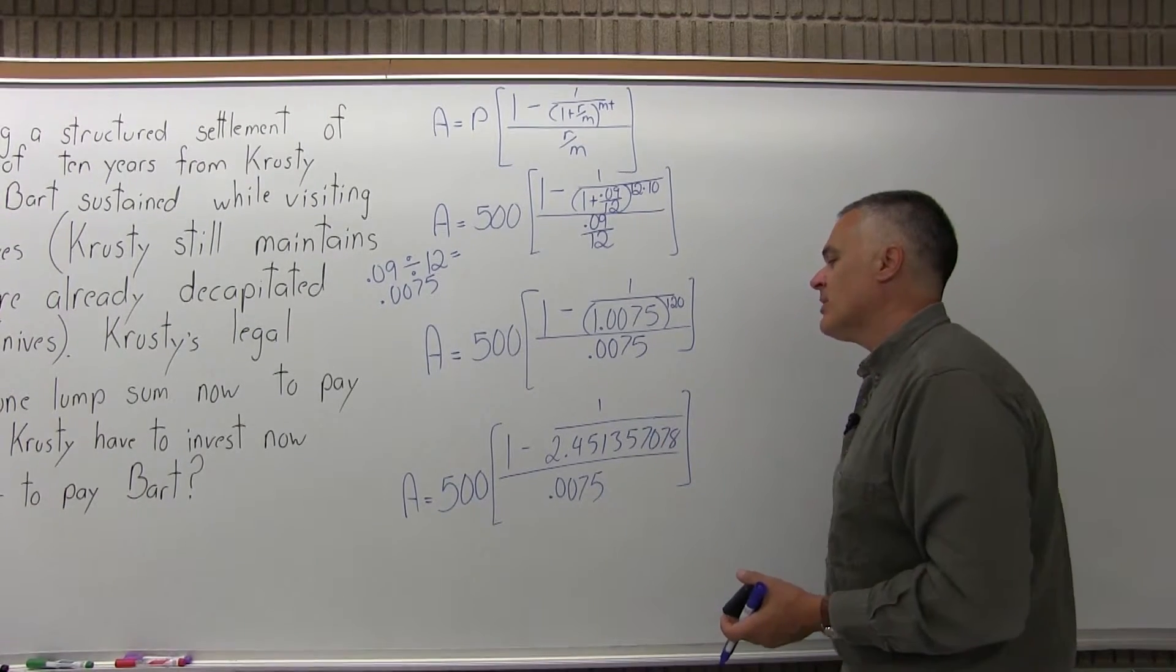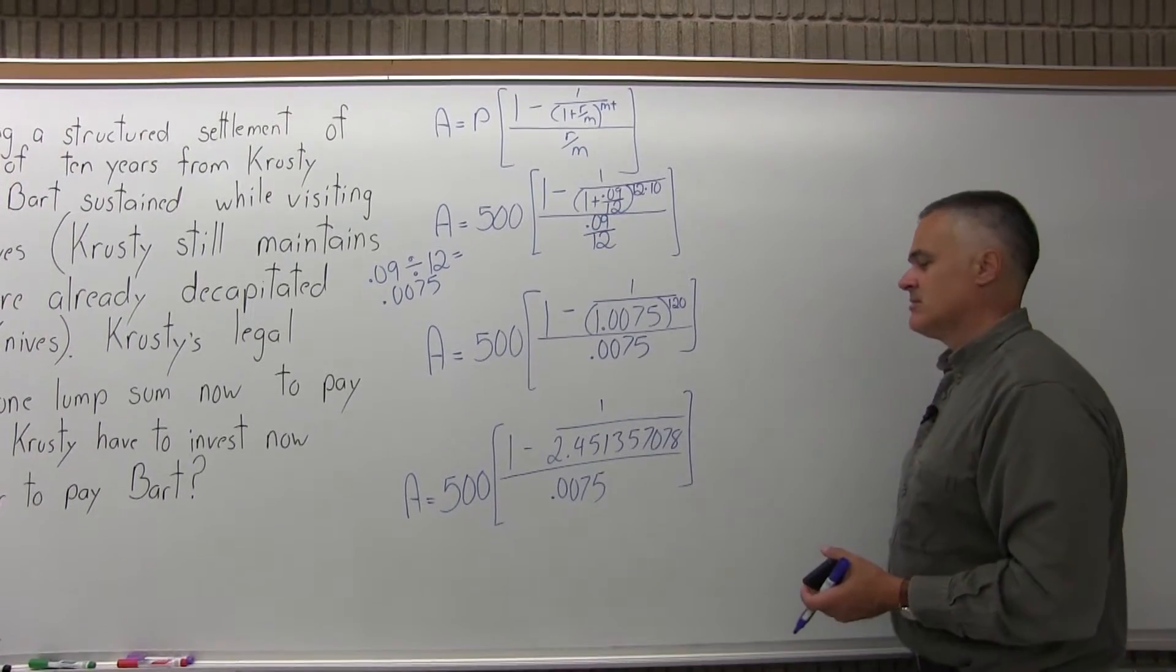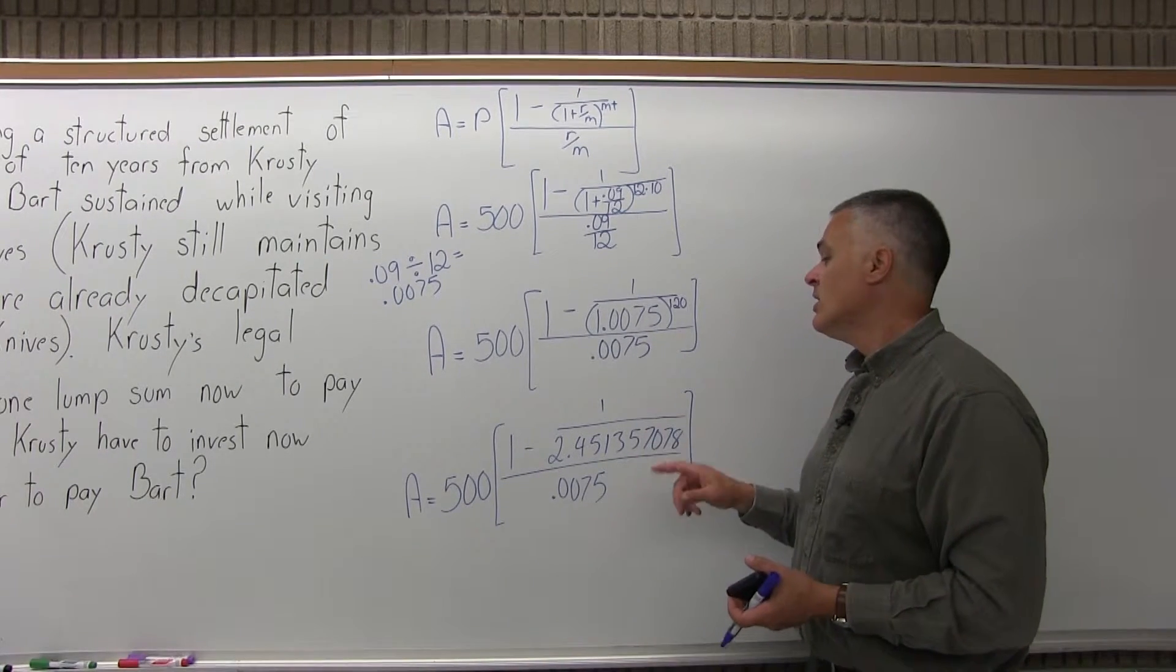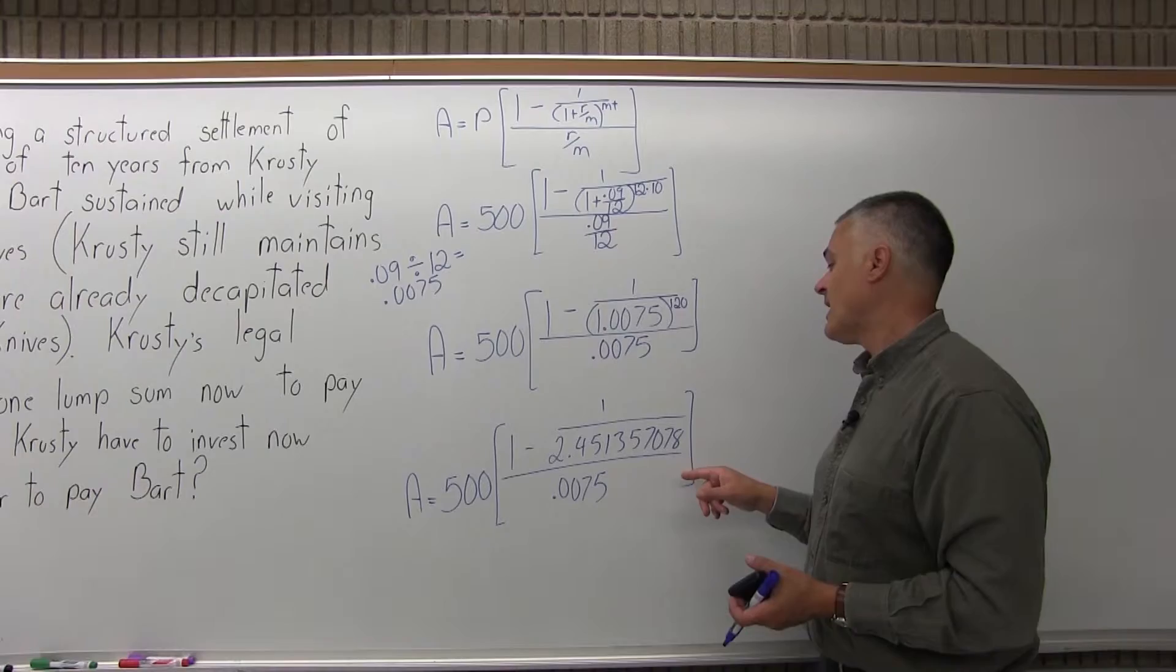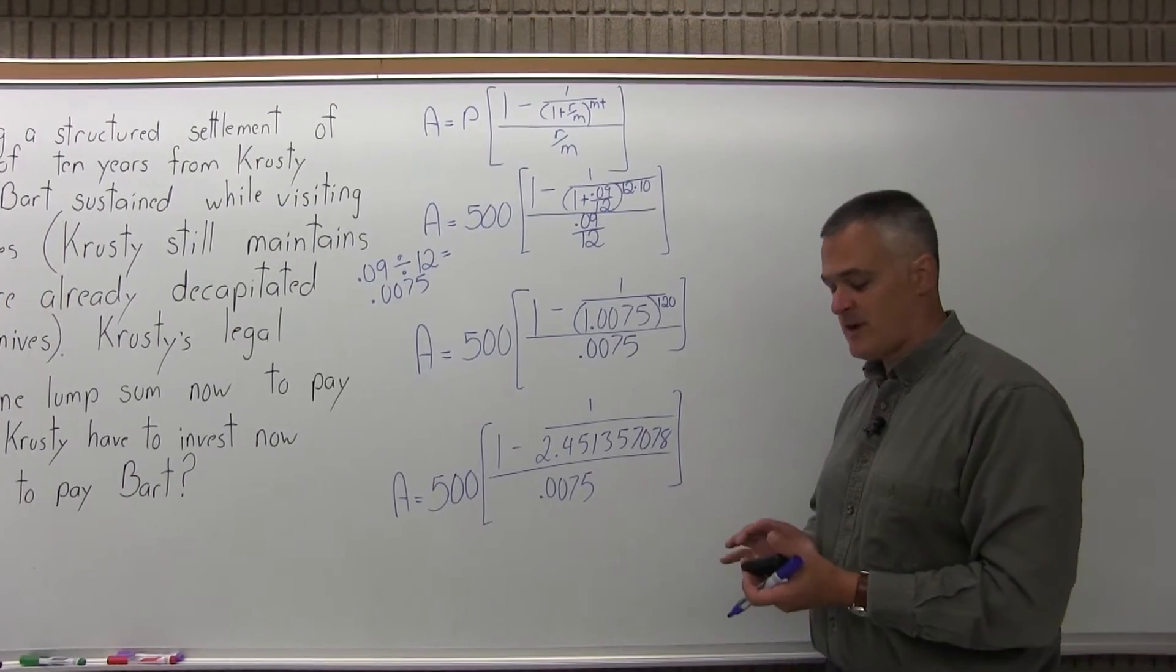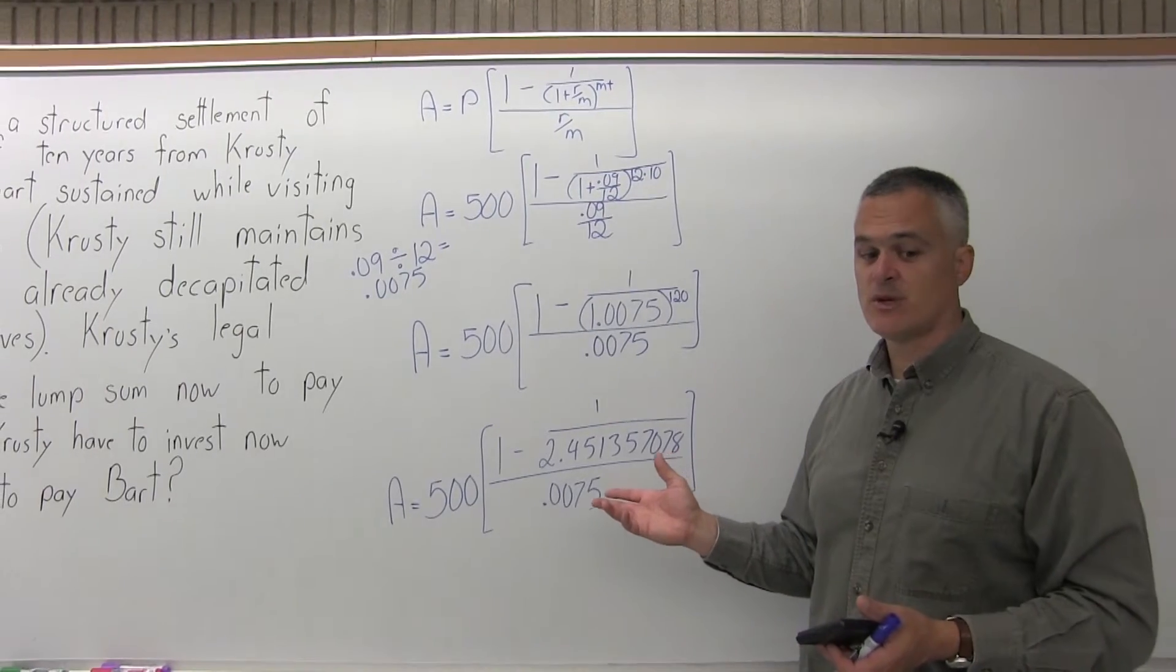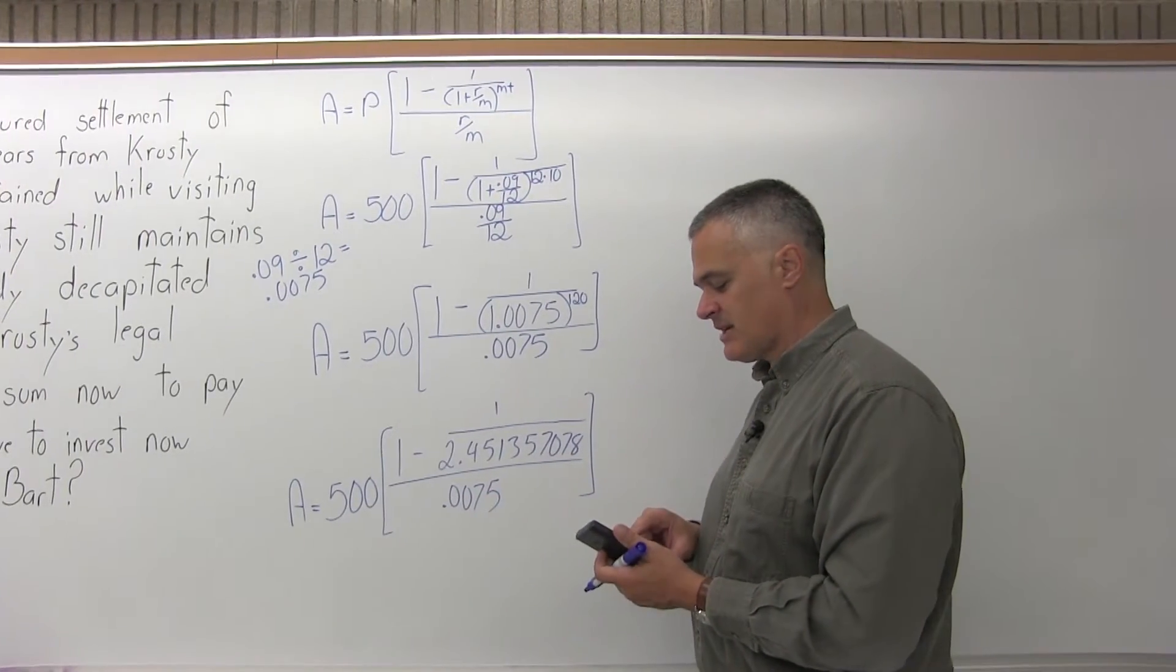So, in the top of the brackets, I have 1 minus a fraction. So I want to just write that fraction as a decimal. I have 1 over 2.451357078. I can simplify that, again, while the value of 2.45 something is on the screen in my calculator. There's a button that says 1 over x, so I'll just press that.